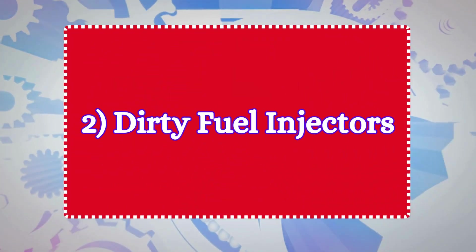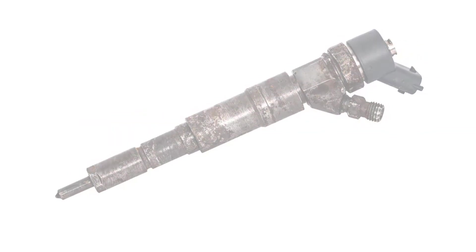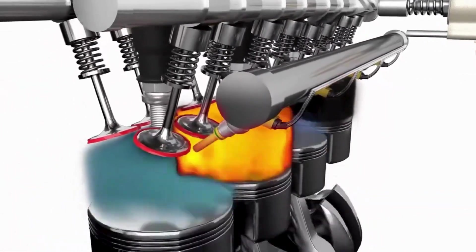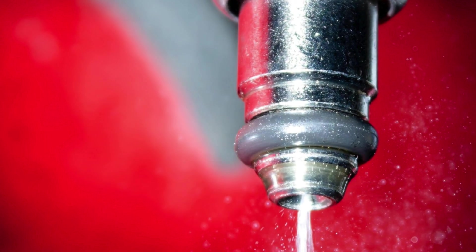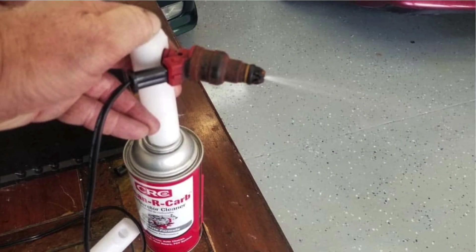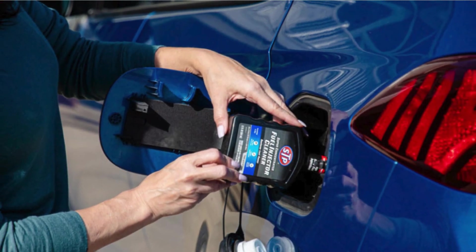2. Dirty fuel injectors. Another culprit could be dirty fuel injectors. Fuel injectors deliver fuel into the engine in a precise spray pattern. If they are dirty or clogged, they may not spray fuel correctly, leading to uneven combustion and engine jerking. An easy DIY fix is using a fuel injector cleaner. Just pour it into your fuel tank, and it helps clean the injectors as you drive.